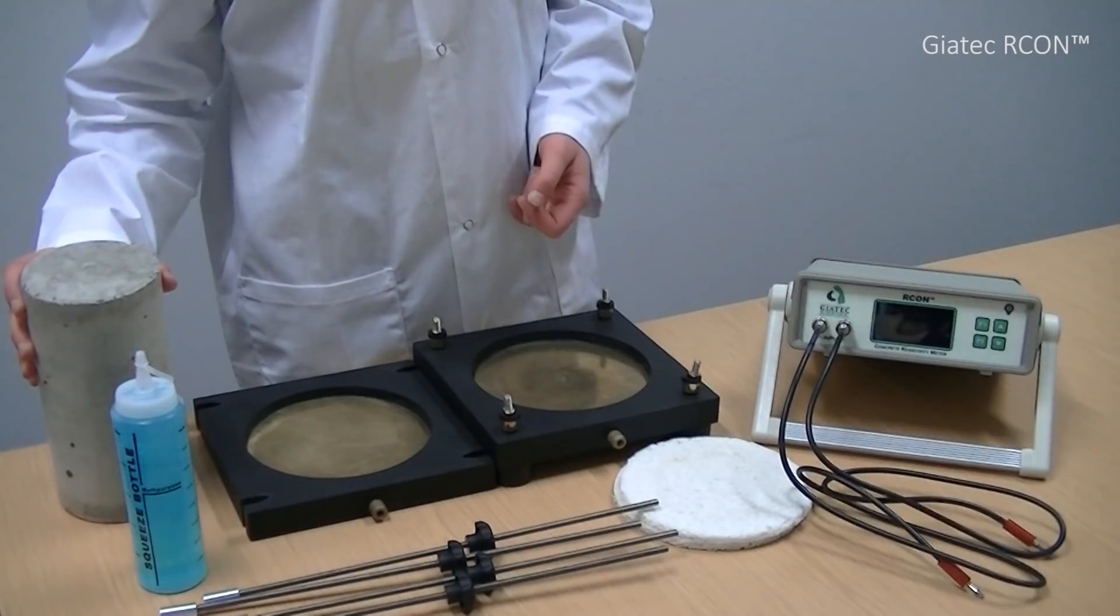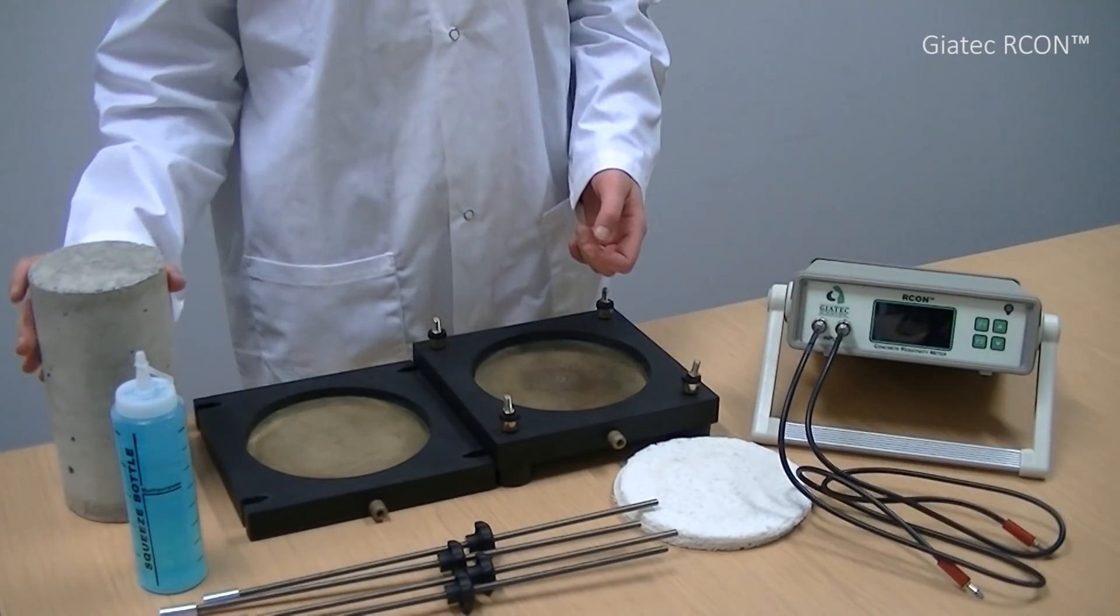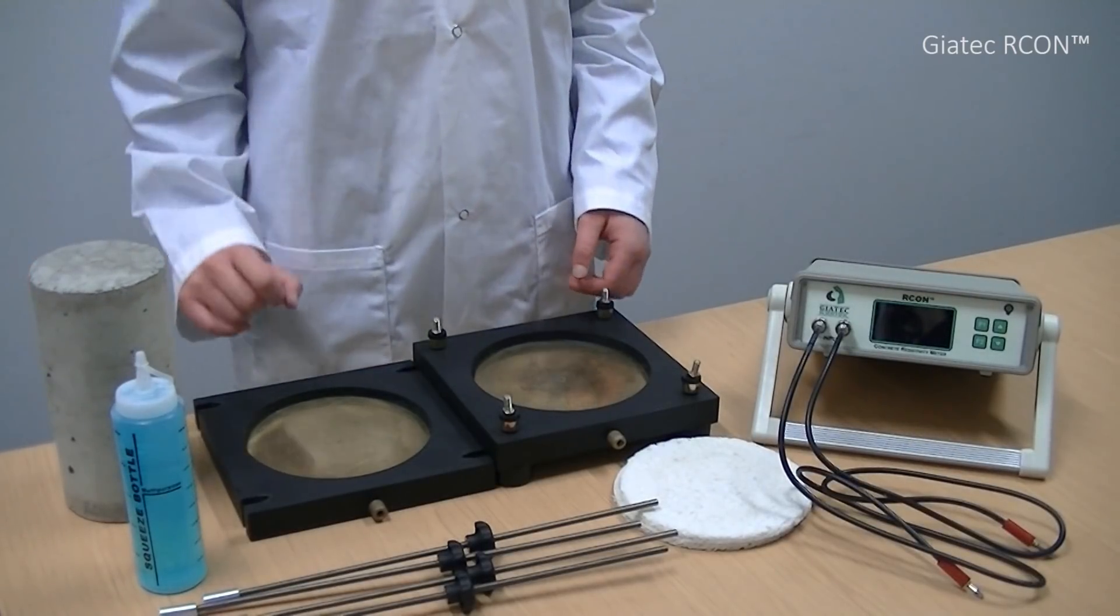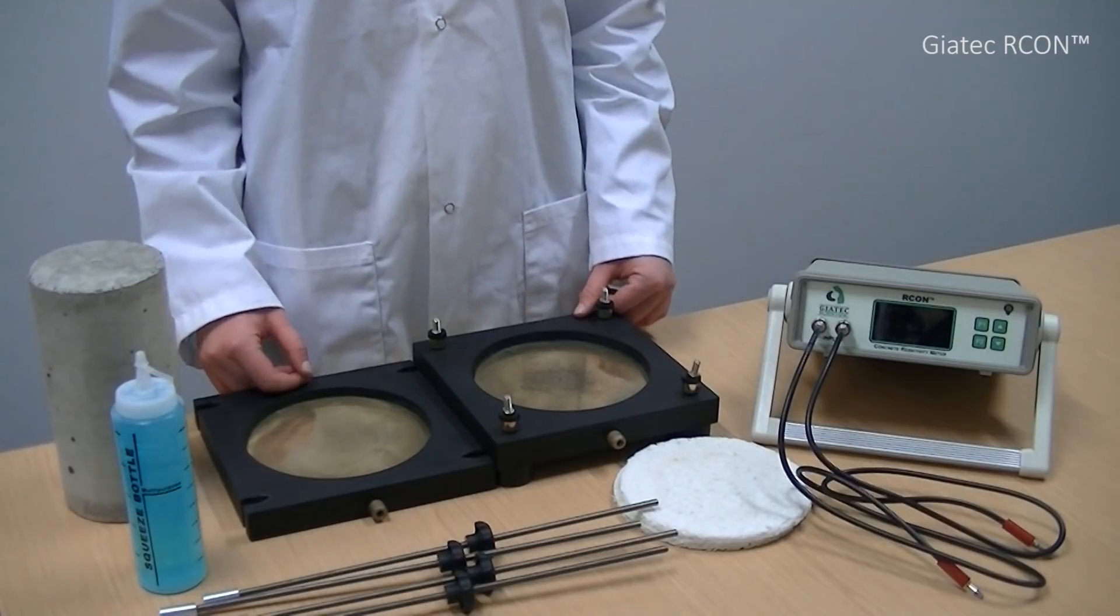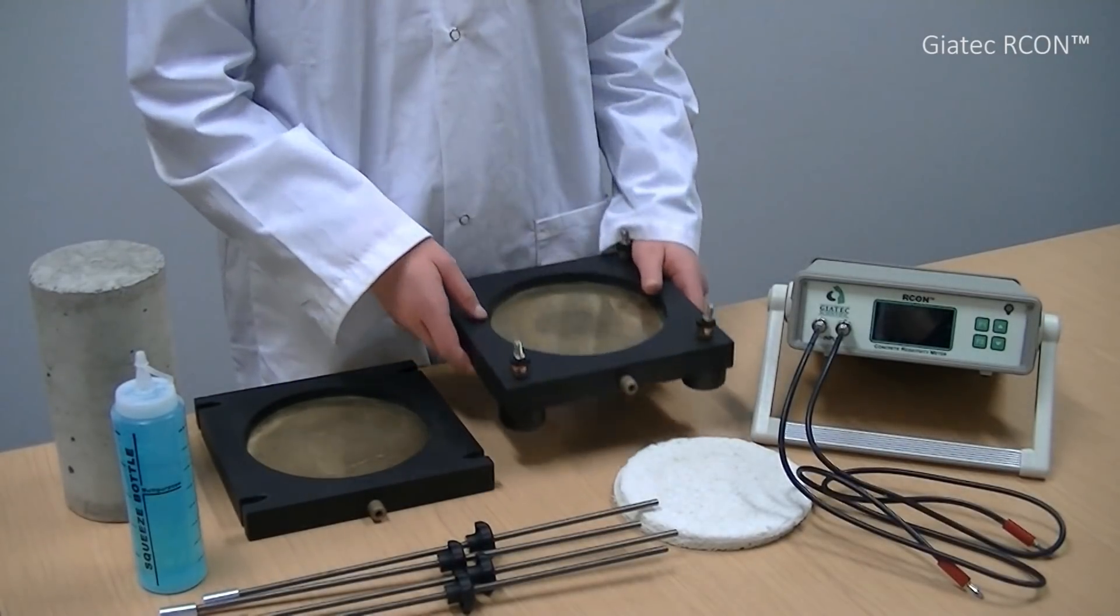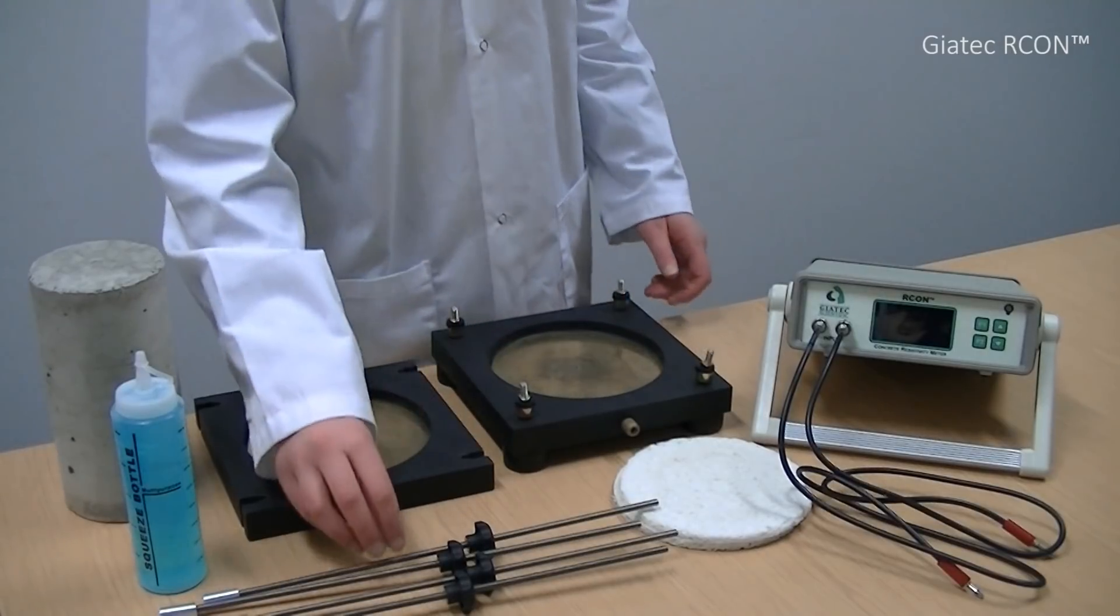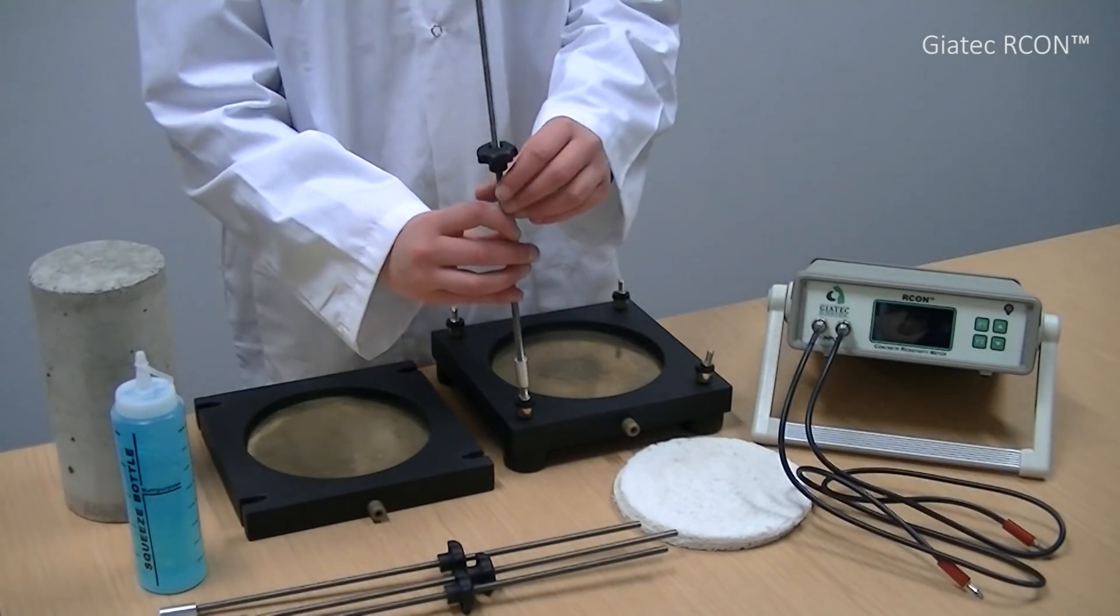Then, the first step of performing the test is to set up the concrete sample holder. Now, I'm going to show you how to do this. Here is the sample holder bottom plate. Now, I need to screw the four rods to these standoffs.